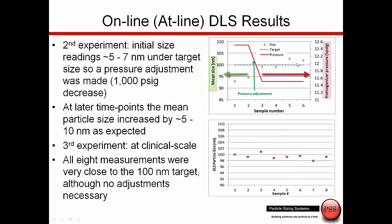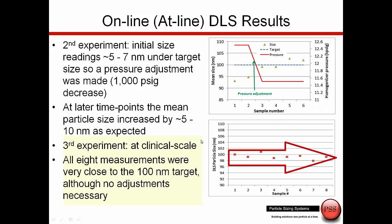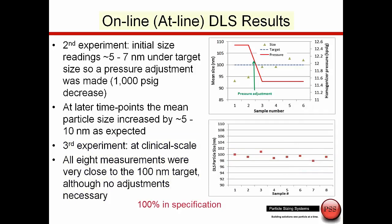Once the relationship between homogenizer pressure and particle size was understood, we could start using the instrument for process control. Here we see particle size on the left and homogenizer pressure on the right. At the beginning, the particle size was at 93 nanometers — a bit smaller than the desired 100 nanometers. By reducing the homogenizer pressure, we could get the particles right up into the desired size range, and then control particle size very tightly over the entire batch. These are very high value batches, and using online size measurement ensures 100% of the batch is within control — something you really can't do by taking samples to a lab.